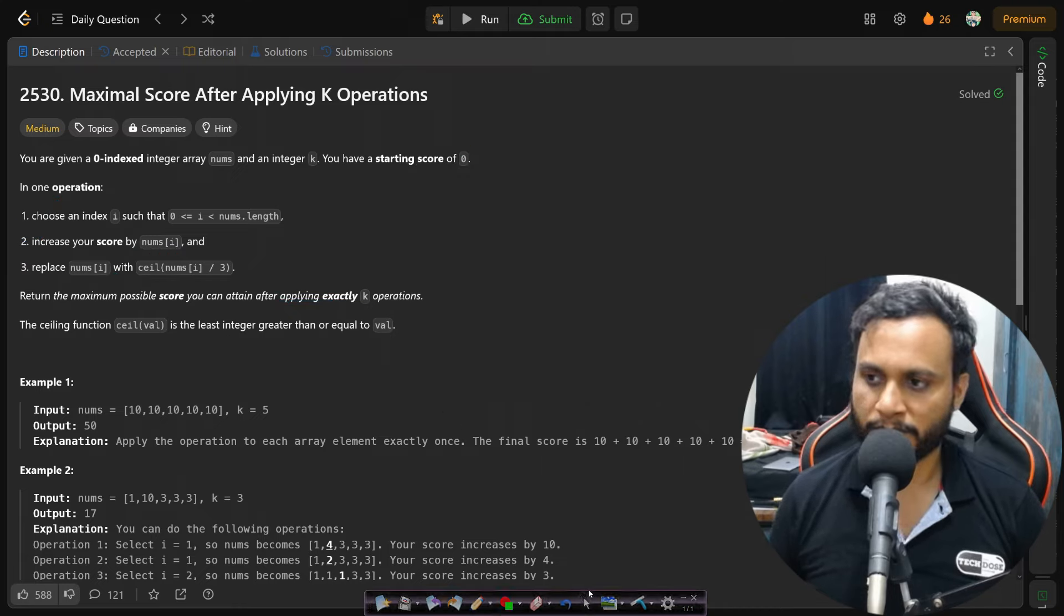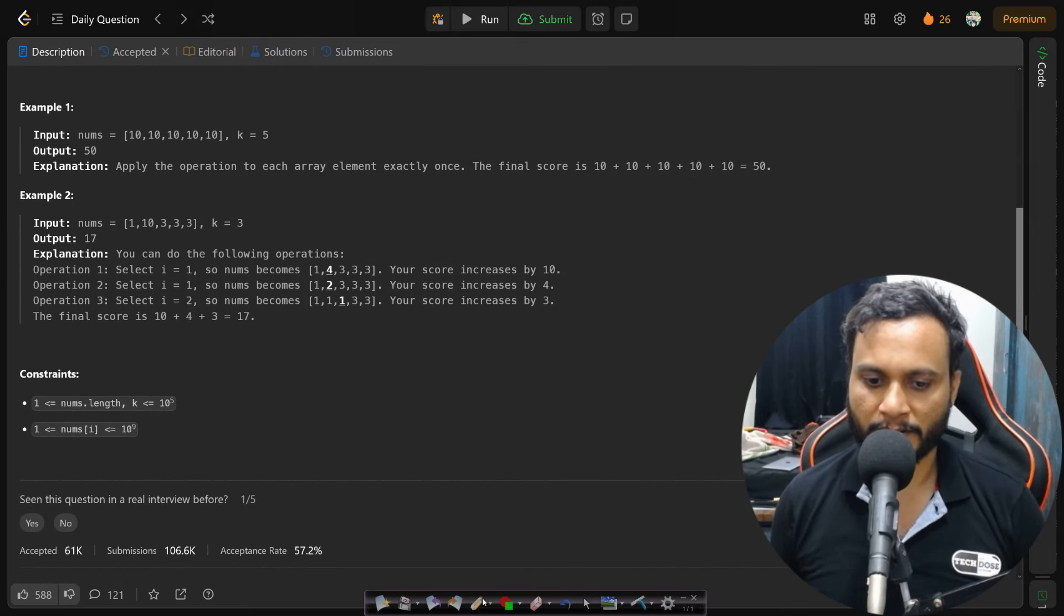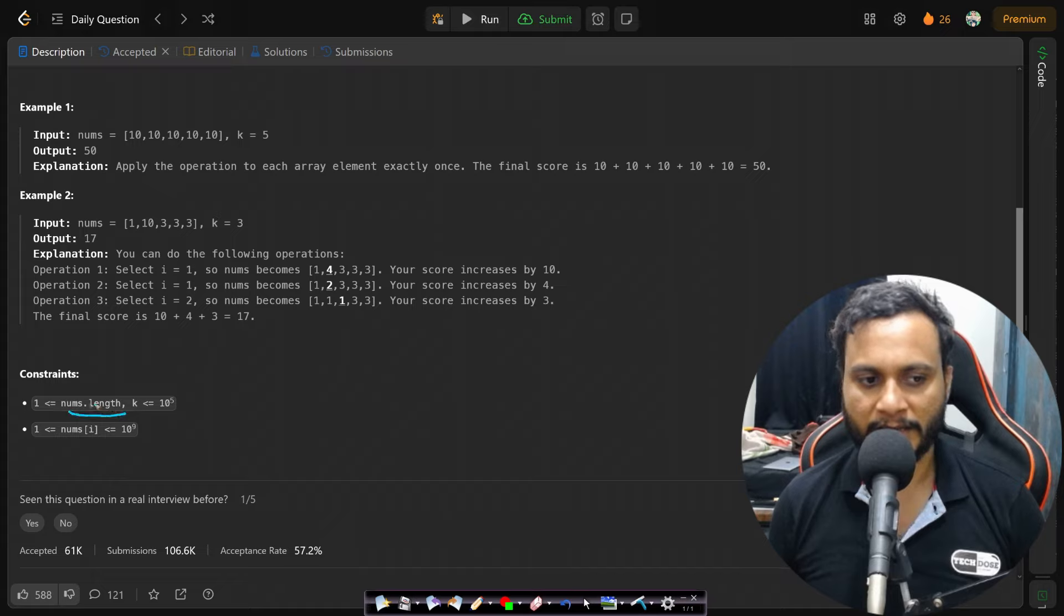Let's look at some constraints before we actually look at examples. In this case they are mentioning that the array is at least having one size and each value can be 10 to the power of 9.